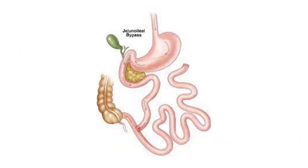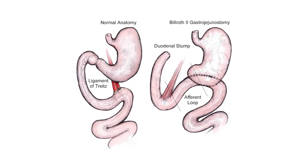You can see this image of a blind loop — a jejunal bypass with side-to-side anastomosis with the ileum. This is the blind loop syndrome showing vitamin B12 deficiency and megaloblastic anemia. In the first diagram you can see normal anatomy, and in the second diagram, the gastrojejunostomy with the duodenal stump, blind loop, and afferent loop.